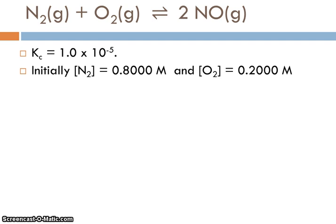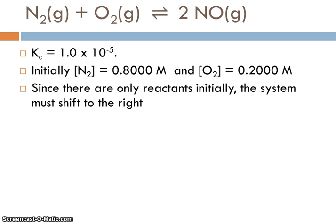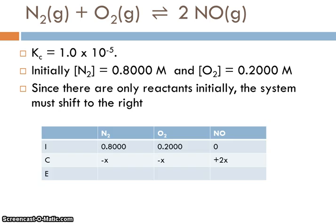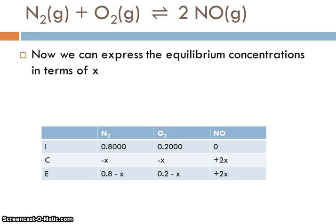So we can then think about, okay, since I only have reactants initially, I have to shift right. I have to have reactants and products at equilibrium. And at equilibrium, of course, we won't see any change in their concentrations. The concentration of nitrogen has to drop by x because it had a coefficient of 1. Concentration of oxygen has to drop by x because it has a coefficient of 1. And the concentration of NO has to increase by 2x because its coefficient is 2.